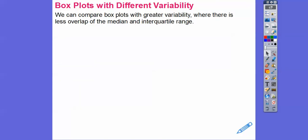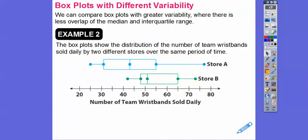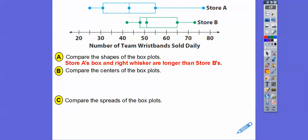We can compare box plots with greater variability where there is less overlap of the median and interquartile range. Here are box plots showing the distribution of the number of wristbands sold daily by two different stores over the same period of time. Store A ranges from about 24 up to about 77, and store B goes from about 42 up to about 73. Store A's box and right whisker are longer than store B's — the middle 50% and top 25% are bigger for store A.